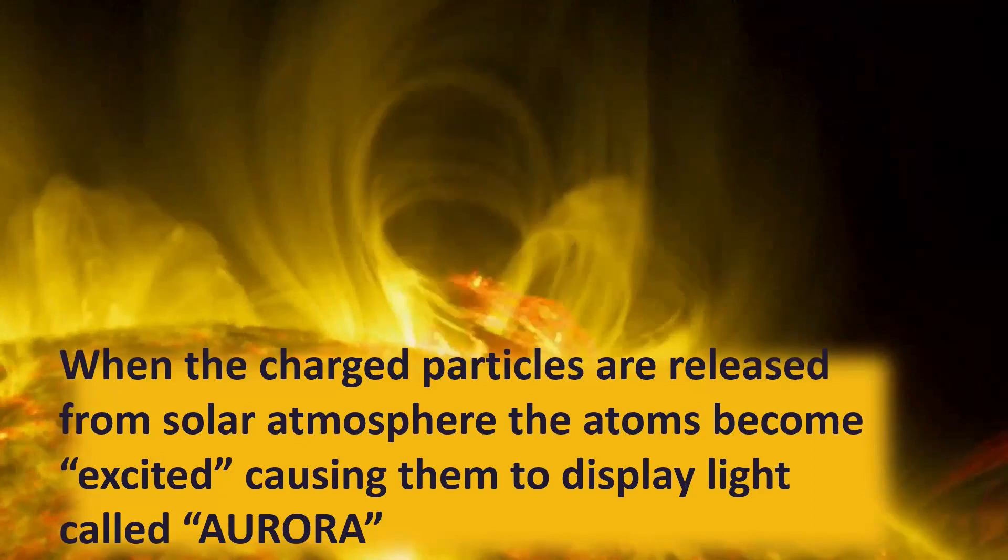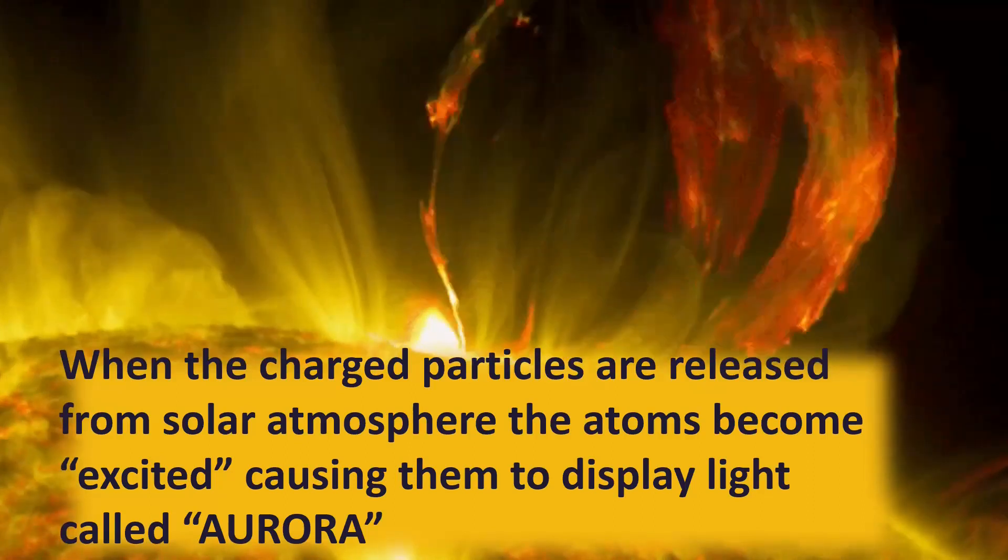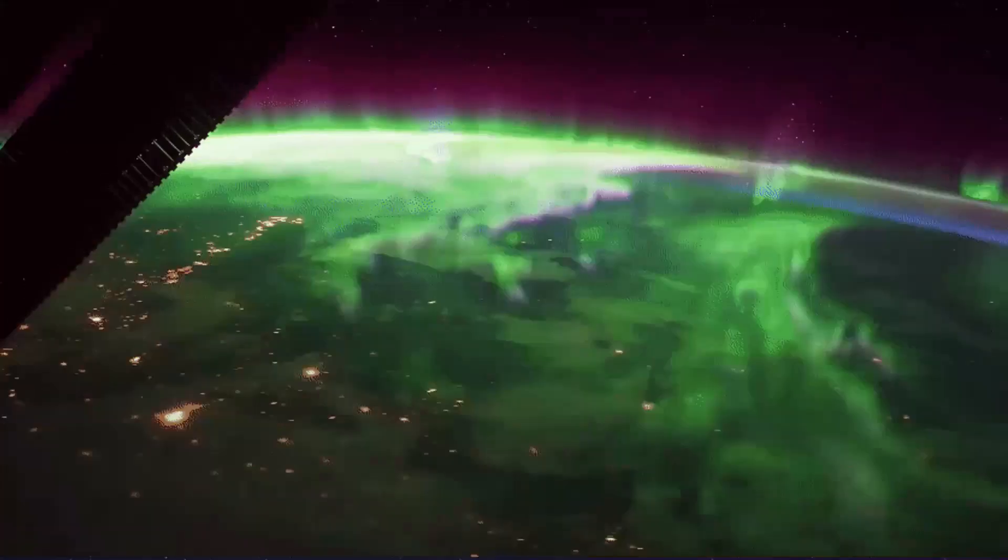When the charged particles are released from the solar atmosphere, the atoms become excited, causing them to display light called aurora, the dancing lights.